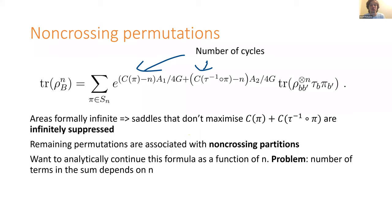One thing you might try is to just take the permutation that contributes the largest amount — often either the identity permutation or tau itself — and only think about that term. That is in fact the assumption made by Lewkowycz and Maldacena, and it's the assumption needed to get the quantum extremal surface prescription.